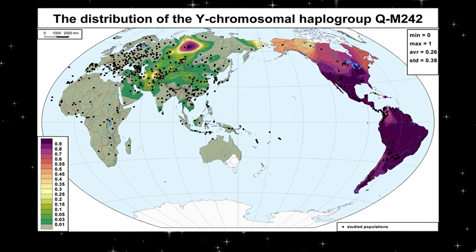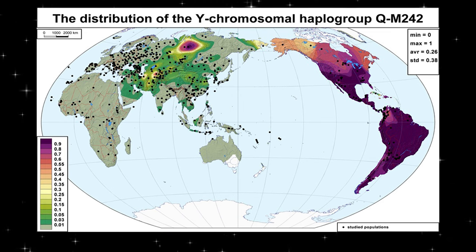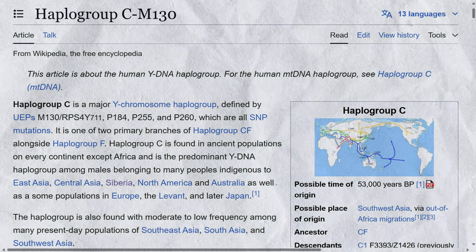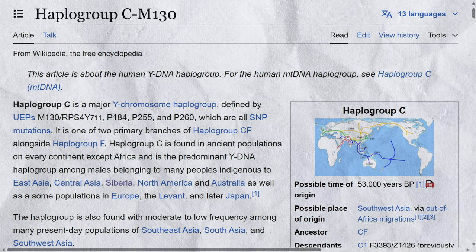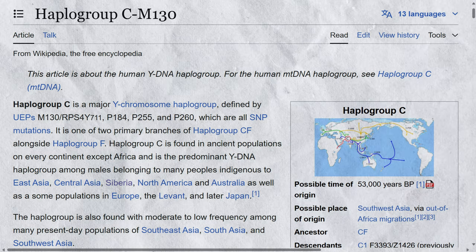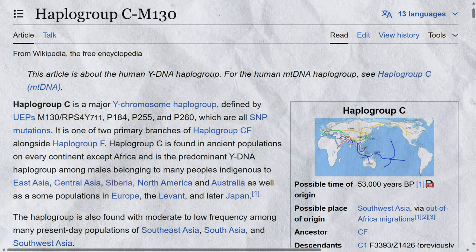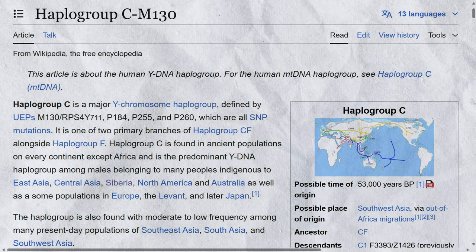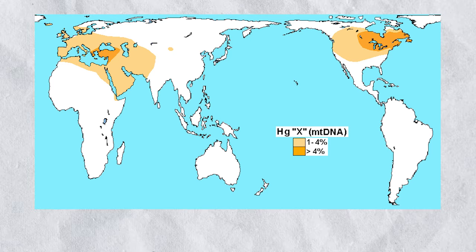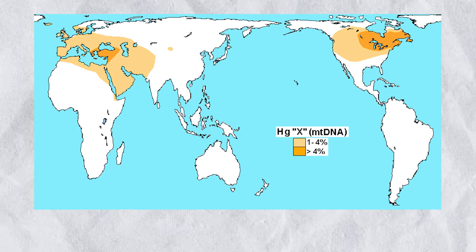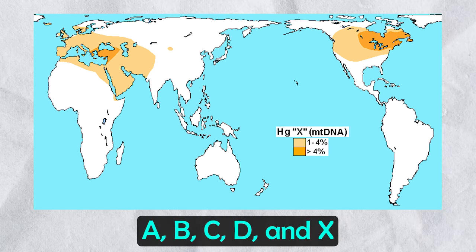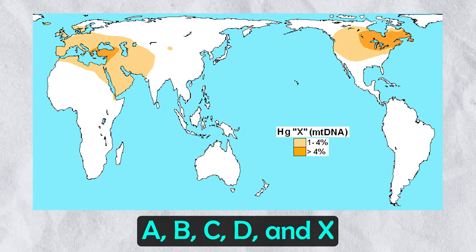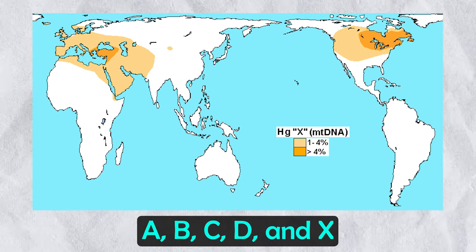The Y-DNA haplogroup C-M130 is less common but still worth mentioning, as it is still found in Native American men at lower levels compared to Q. On the maternal side, Native American mitochondrial DNA is largely dominated by haplogroups A, B, C, D, and X.